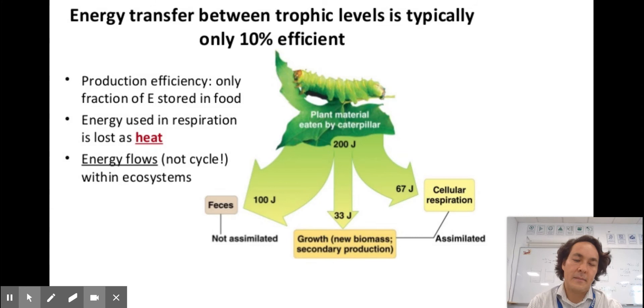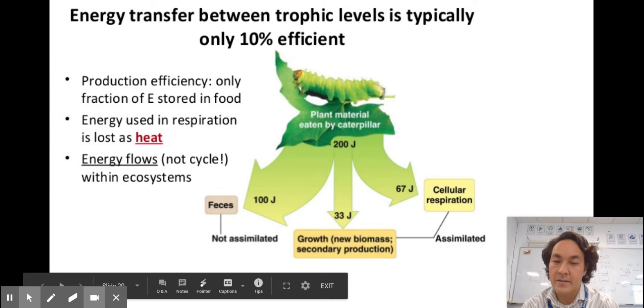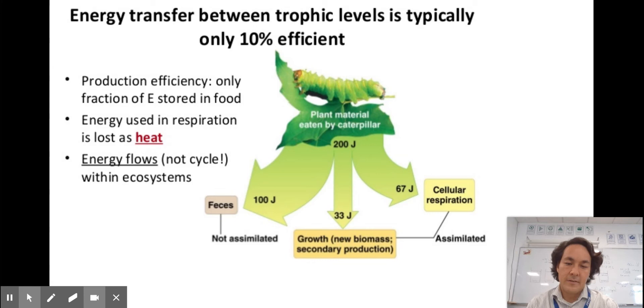Here's a picture of it. Here would be the plant eaten by the caterpillar. Let's say the caterpillar takes in 200 joules of energy. Well, 100 of it's just going to get pooped out and not used. 67 joules of this energy is going to be used by the caterpillar to do cellular respiration. Only 33 joules is going to be used to grow and make new biomass.